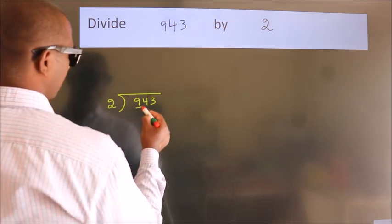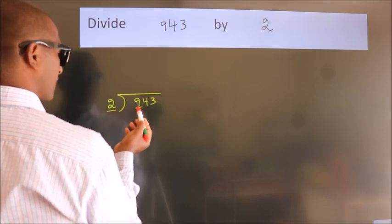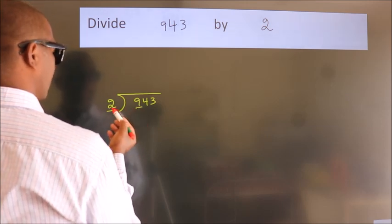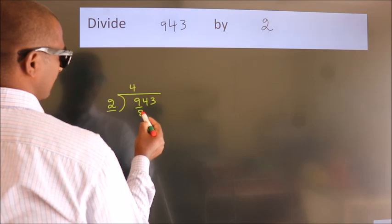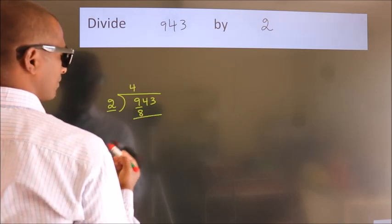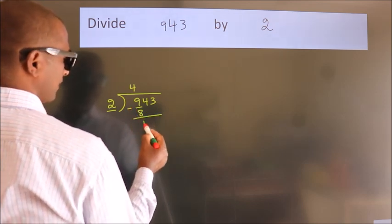here we have 9. Here, 2. A number close to 9 in the 2 table is 2 4s 8. Now, we should subtract. We get 1.